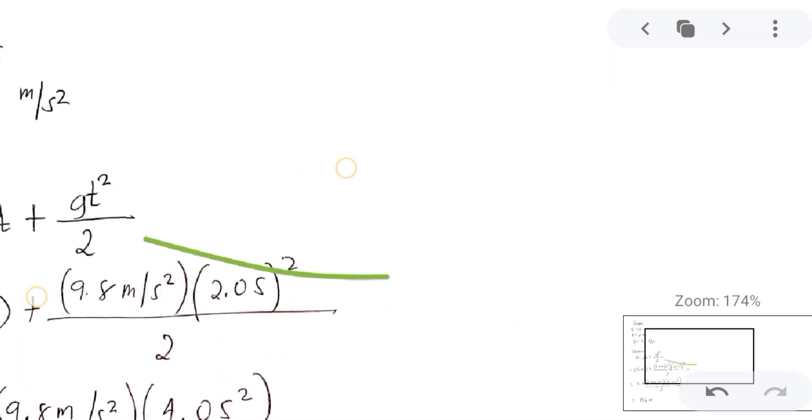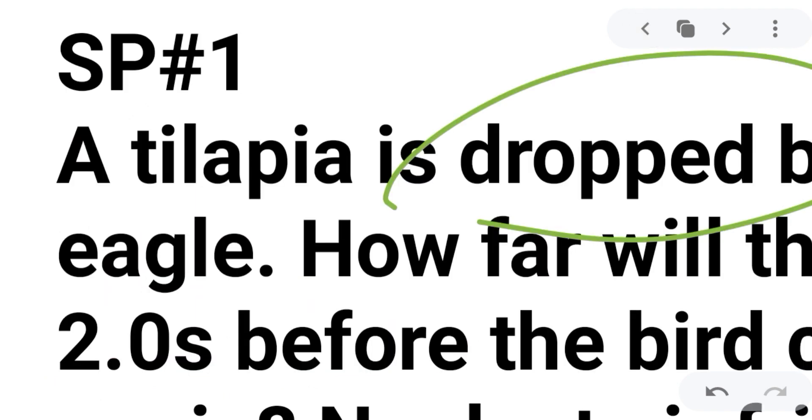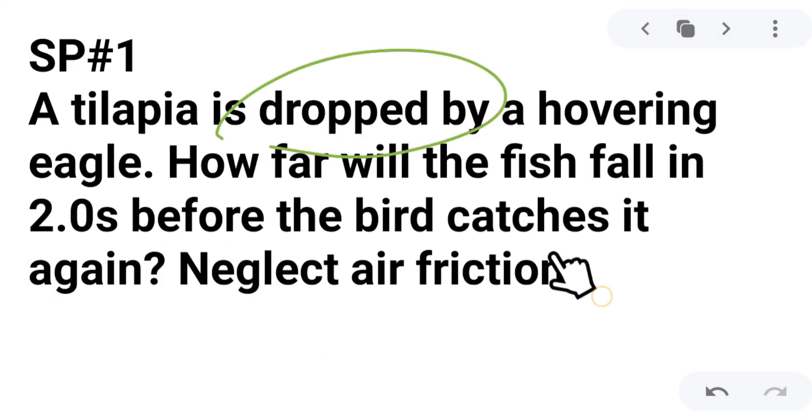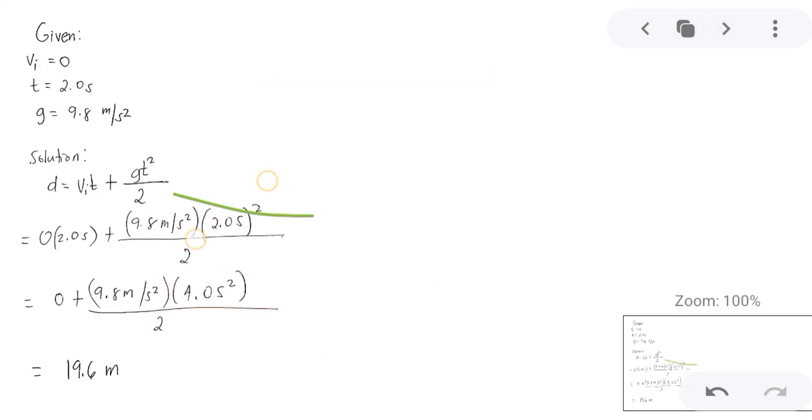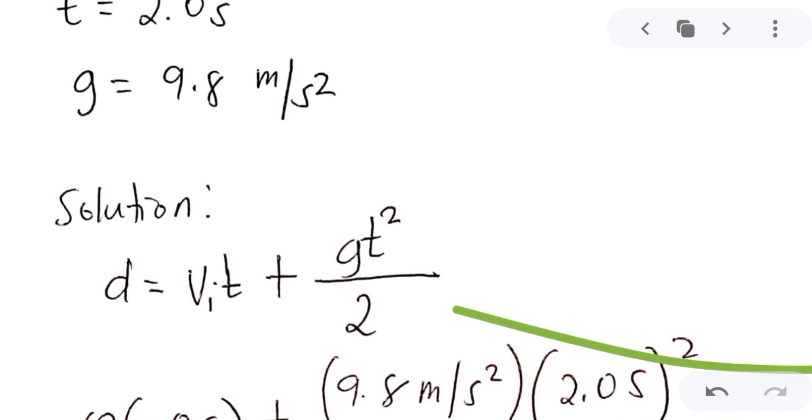We have here the given values of initial velocity of zero. It is not specified here. And then, time at 2.0 seconds. Acceleration due to gravity at 9.8 meters per second squared. That is positive because it is dropped and it does not oppose the gravity.